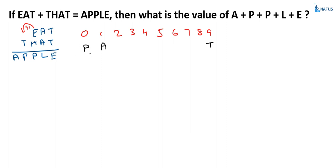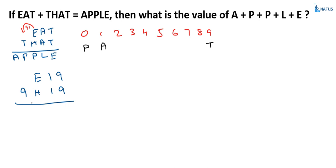Now, substitute the values in this equation to get the remaining values. We don't know E, so let us take E. A is equal to 1, T is equal to 9, H we don't know, A is equal to 1, T is equal to 9. For APPLE: A is equal to 1, P is 0, P is 0, L and E remain.